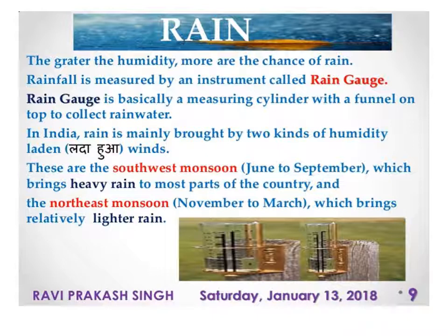A rain gauge is basically a measuring cylinder with a funnel on the top to collect rain water. In India, rain is mainly brought by two kinds of monsoons. The first is the southwest monsoon, from June to September, which brings heavy rain to most parts of the country.